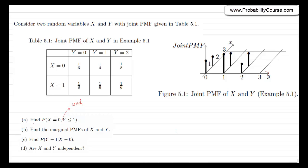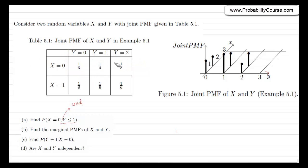For part A, the probability that X=0 and Y≤1: since x must equal 0, we look at that column. Since y can only take values 0, 1, and 2, y≤1 means y is either 0 or 1. So we add those two probabilities: p_xy(0,0) + p_xy(0,1) = 1/6 + 1/4 = 5/12.